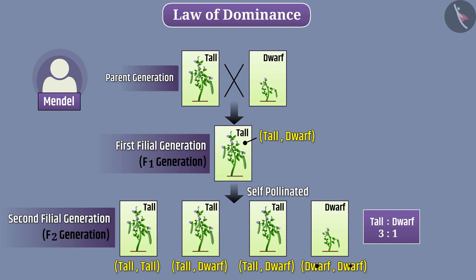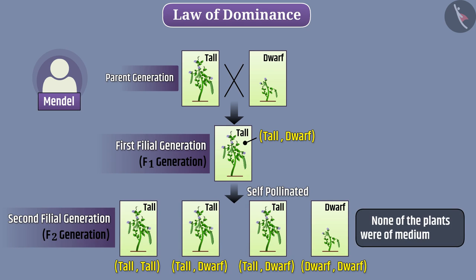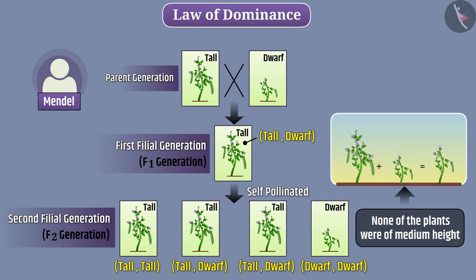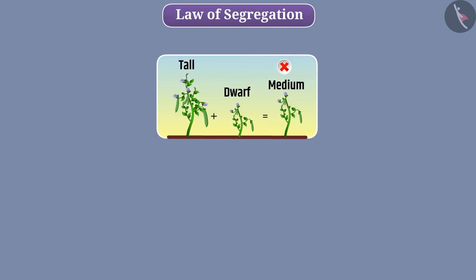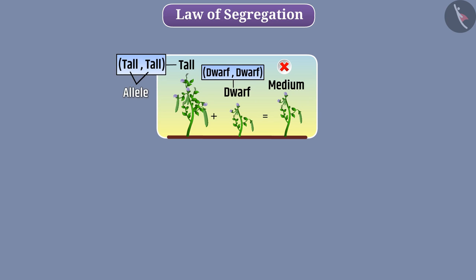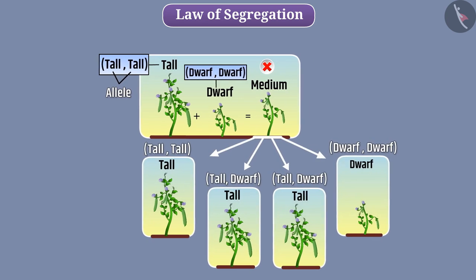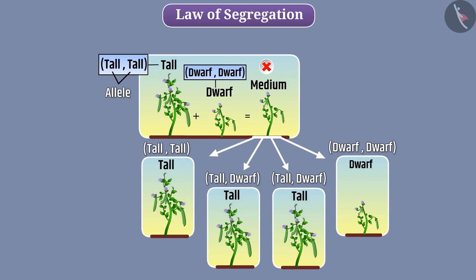Similarly, both tall and dwarf plants appeared in the F2 generation. None of the plants were of medium height — a mixture of tall and dwarf traits did not appear. On the basis of this understanding, Mendel introduced the law of segregation, according to which alleles of a trait do not mix with each other. The alleles of a trait remain pure in the pair.